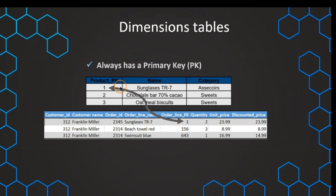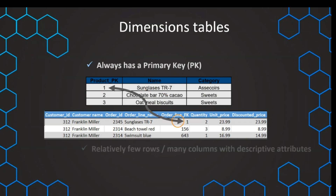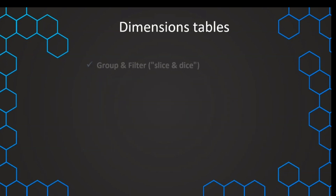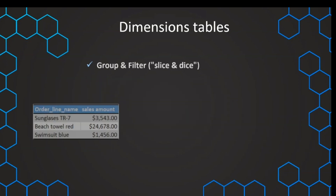In the dimension table, for example, sunglasses TR7 is order line one and it references the correct product name and related attributes such as category, subcategory, and so on. We don't need to keep those attributes in the fact table — we just remove them and use the dimension table instead. Dimension tables usually don't have many rows but are very wide tables with many descriptive columns.